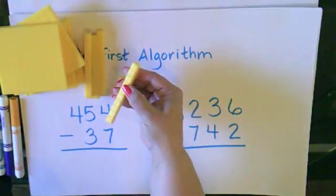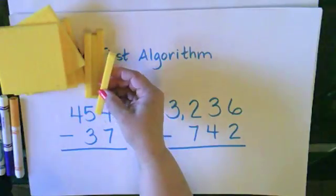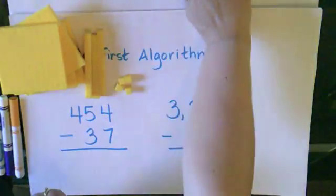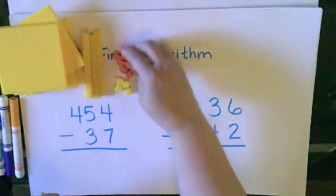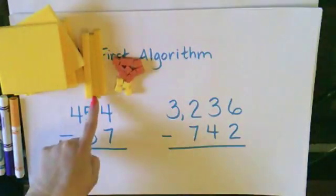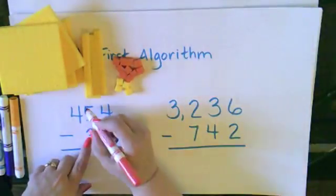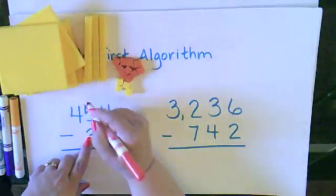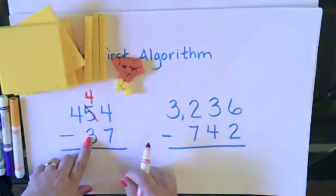If I wanted to break this apart into 1s, I would have 10 1s. So I'm going to trade this 10 for 10 1s. So now I don't have 5 10s anymore — I only have 4 10s.